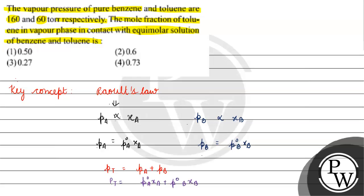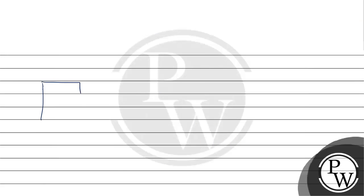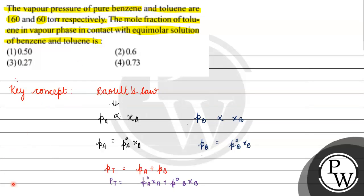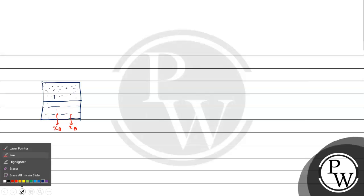Now, in the solvent we have mole fractions XA and XB for the two components — in this question, benzene and toluene. Since we have a volatile solvent here, we need to consider the vapor phase mole fractions as well.